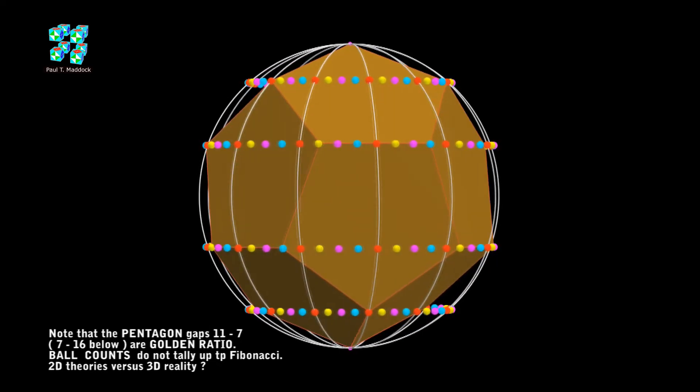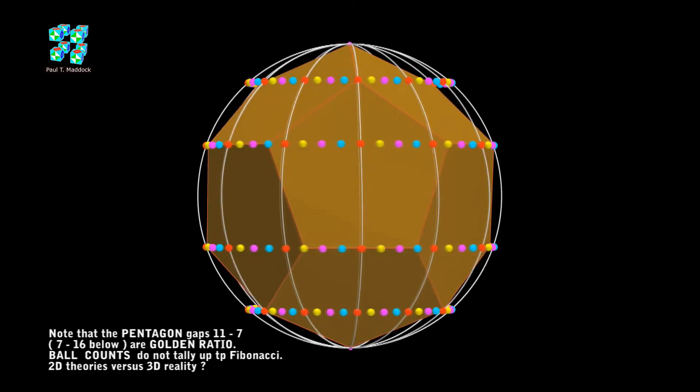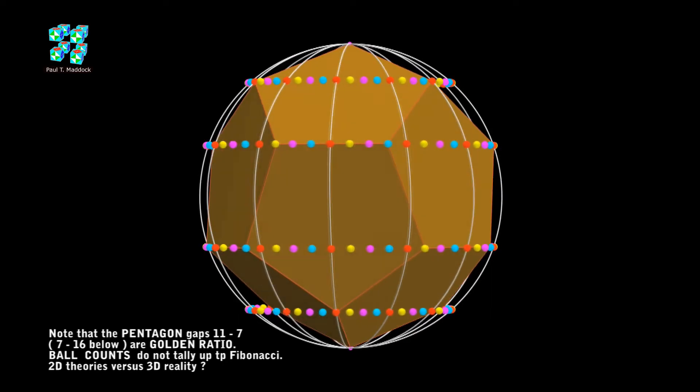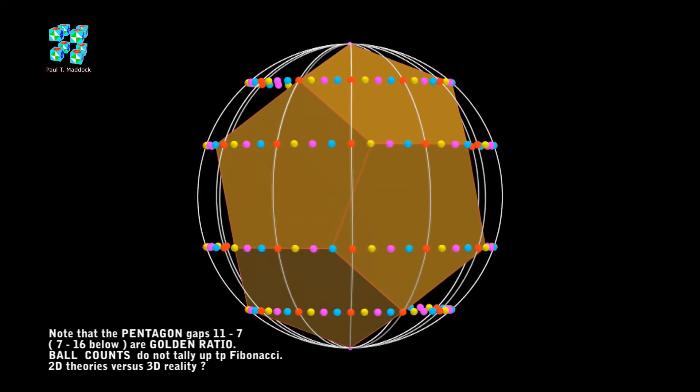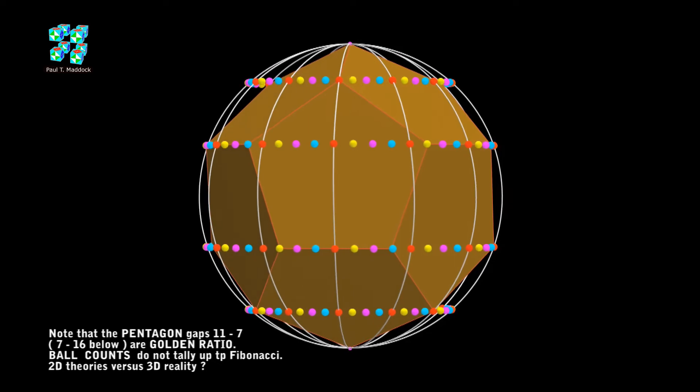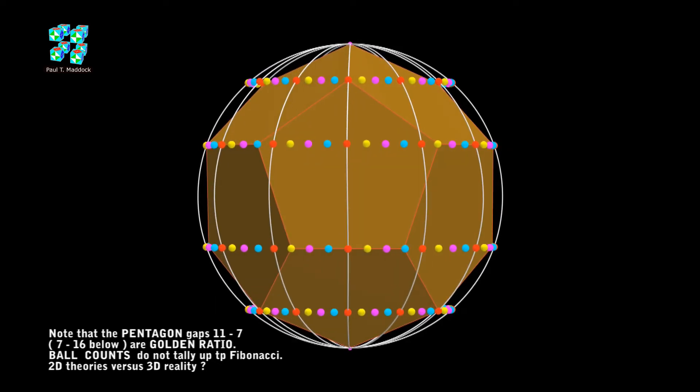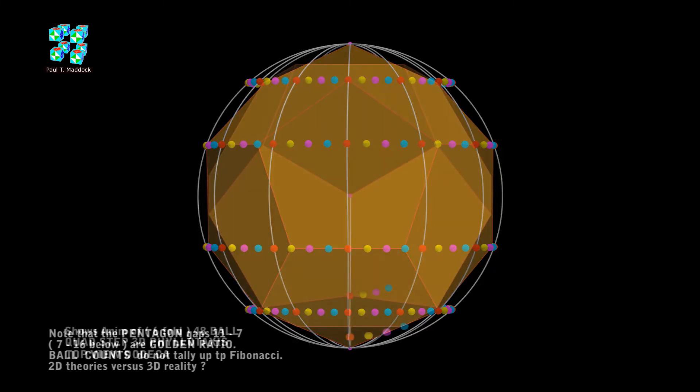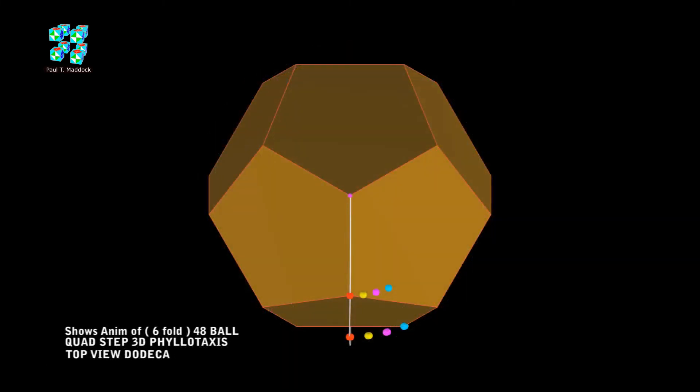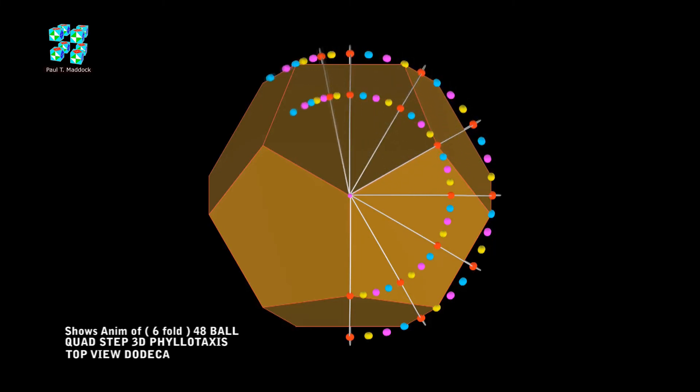Because some of these two-dimensional theories can lead you right down the garden path. I like to work with geometry in 3D reality. I guess the scholars can have the two-dimensional theories. Let's move on a little bit. I like to show you this in the top view also. I think you can really see where this quad-step phyllotaxis lines up perfectly with the geometry of the dodeca. Now that I've showed you this, I think we'll move on a bit and look at the icosa.